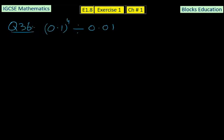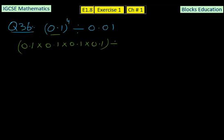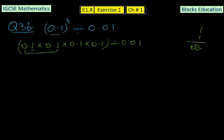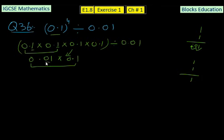In question number 36, we have (0.1)⁴ divided by 0.01. Raising to the power 4 means 0.1 × 0.1 × 0.1 × 0.1, divided by 0.01. Solving the first two: 1 × 1 = 1 without decimals; counting one plus one decimal place gives two places, so 0.1 × 0.1 = 0.01. Multiplying 0.01 × 0.1: 1 × 1 = 1, two plus one gives three decimal places, so the decimal moves three places left and we fill with zeros, giving 0.001.